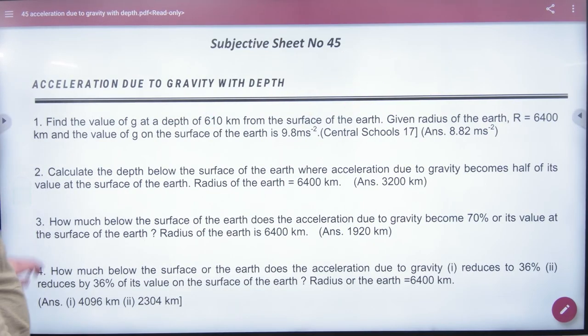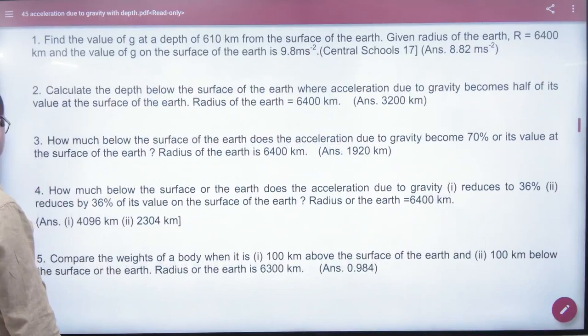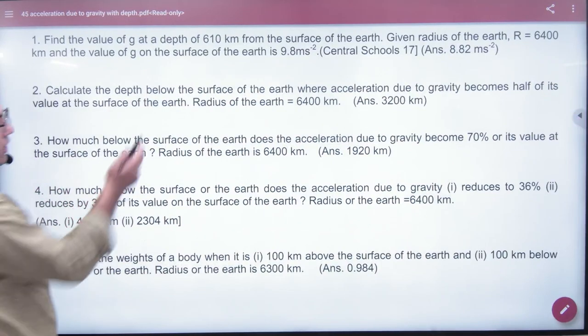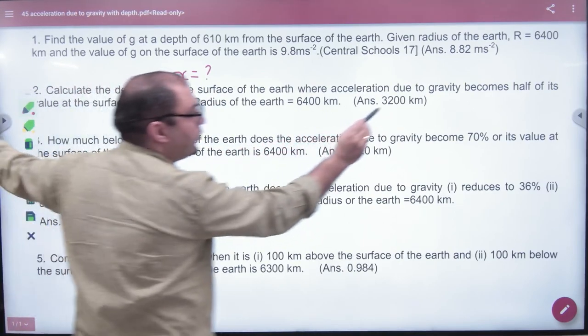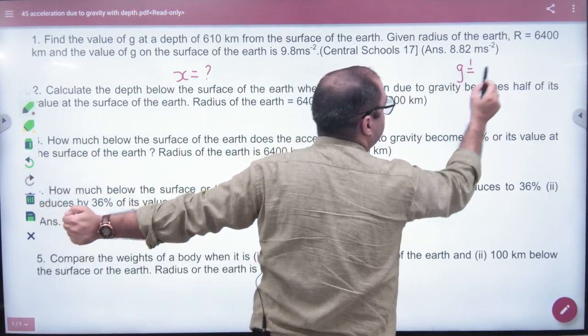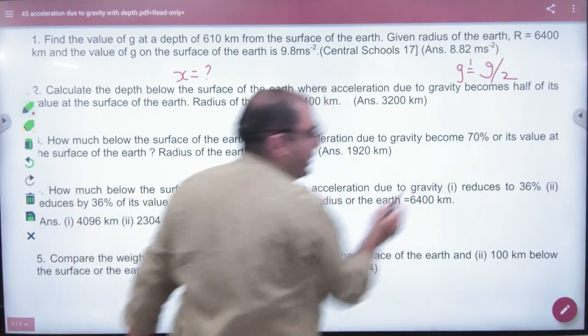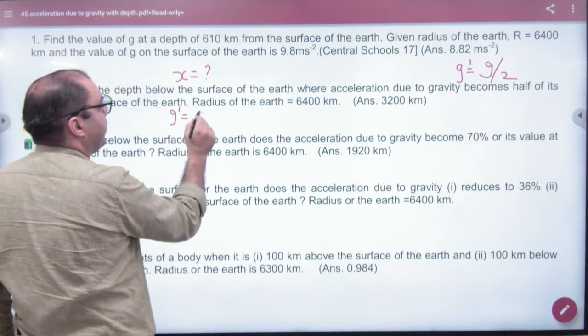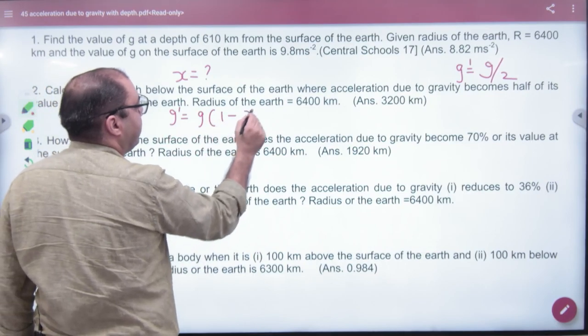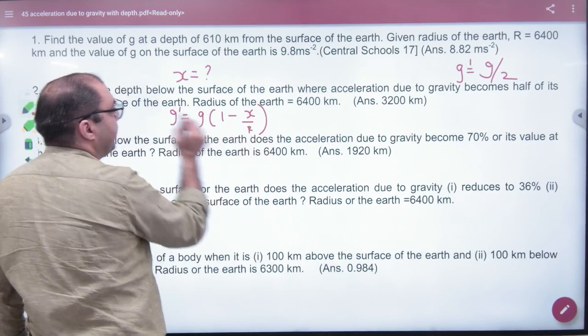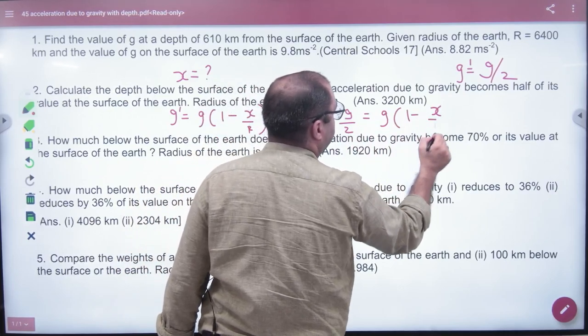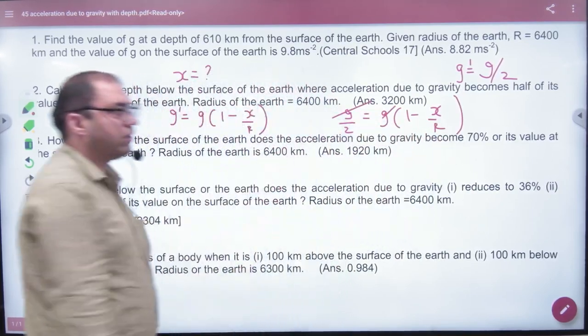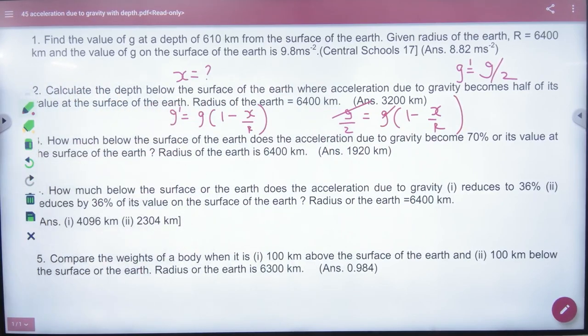The second question: Calculate the depth below the surface of earth. What do we have to find? x, so that the acceleration due to gravity becomes half of the surface value. So g' = g(1 - x/R). What will we put for g'? g/2. So g/2 = g(1 - x/R). g cancels, and x can be found. Do you understand?